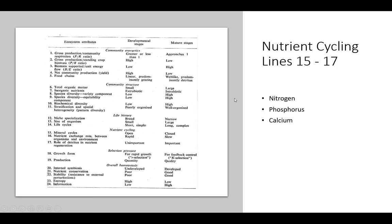Lines 15 through 17 discuss nutrient cycling. The nutrients he mentions as most important are nitrogen, phosphorus, and calcium. These are more readily accessible and open when ecosystems are young, and the nutrient exchange rate will decrease over time. Line 17 on detritus and nutrient regeneration refers to plant litter acting as a fertilizer — this is less important in a younger ecosystem but becomes more important as the ecosystem matures.